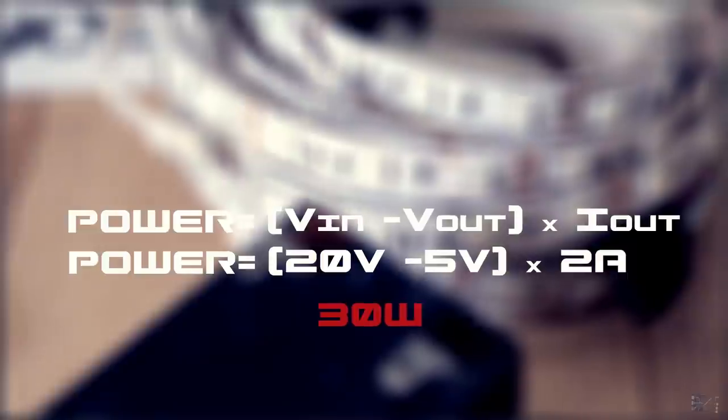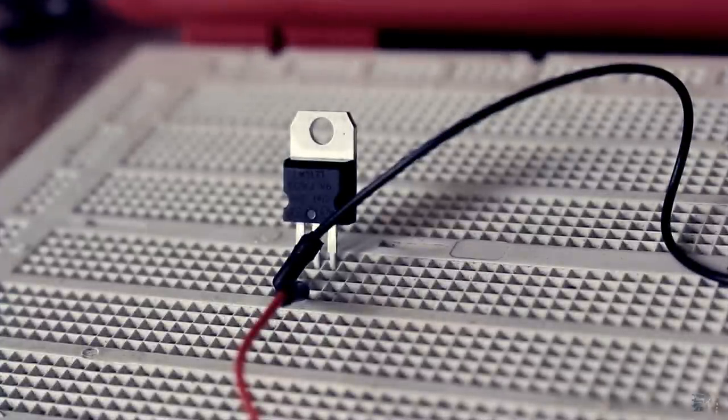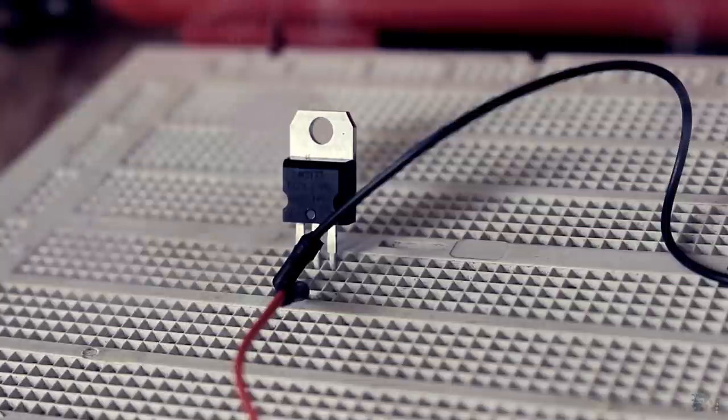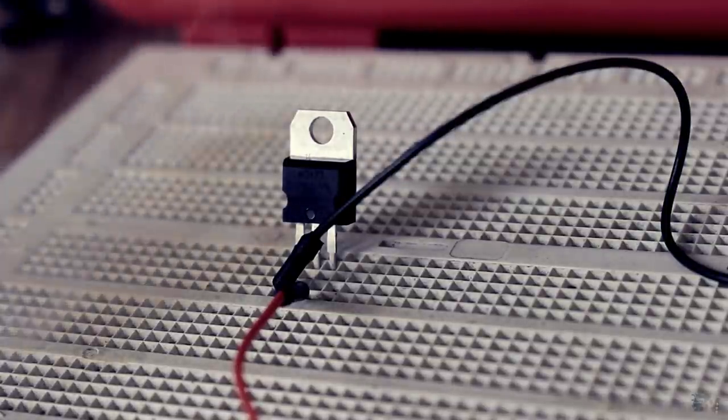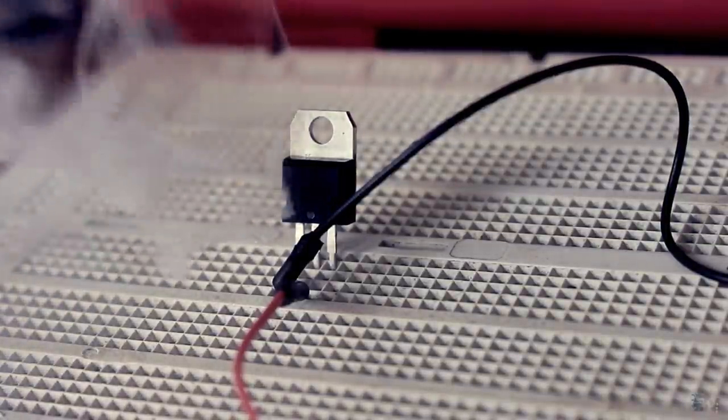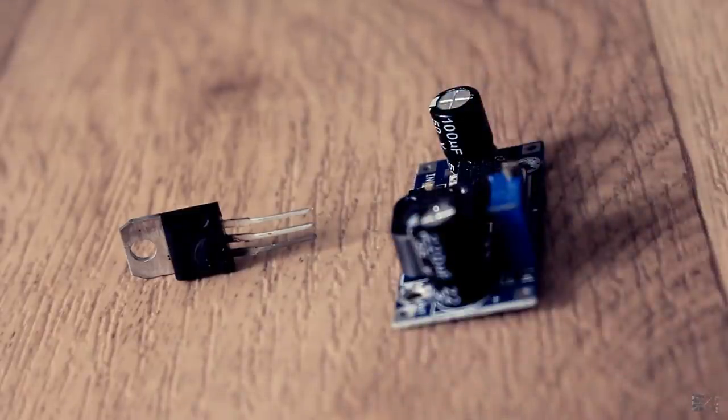Common linear regulators won't withstand 30W of power. And this would happen to your circuit. That's why for high power projects is better to use a switch converter.